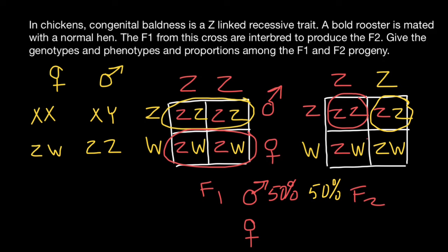As for the hens, 50% of the hens are going to be bald, but 50% are going to be phenotypically and genotypically normal. We can also say that the ratio is going to be 1:1 and 1:1 here. That's all for today. Subscribe and see you in the next video. Goodbye.